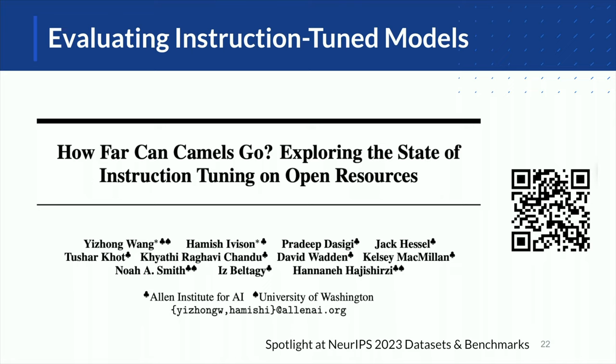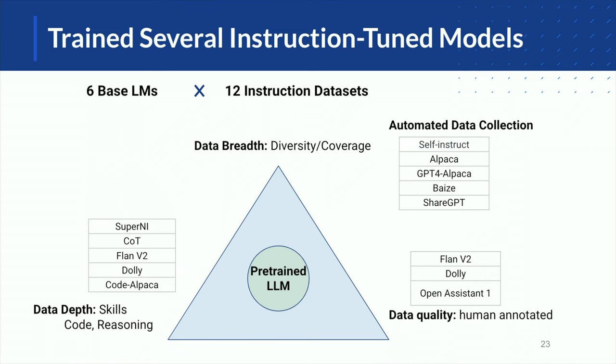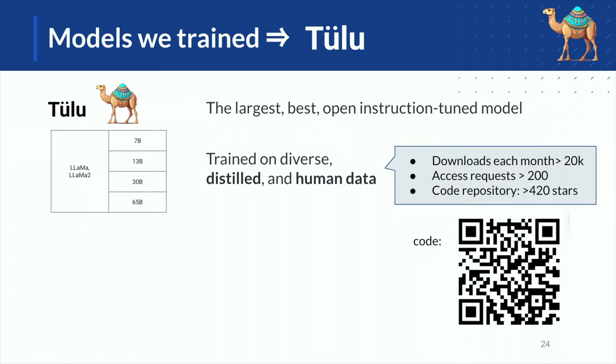We tried to evaluate all these LLaMA-type models and see where we are in the open-source instruction tuning literature, covering all three dimensions of data breadth, data depth, and data quality. We looked at different datasets created by our team and others, evaluated six base language models including Meta's and Falcon, and combined all of them to build a new instruction-tuned model called Tulu, which we claim is the largest and best open instruction-tuned model at this point, trained on a diverse distilled set of demonstration data.